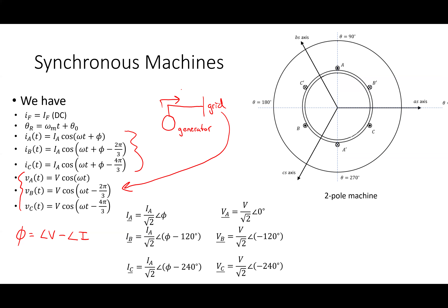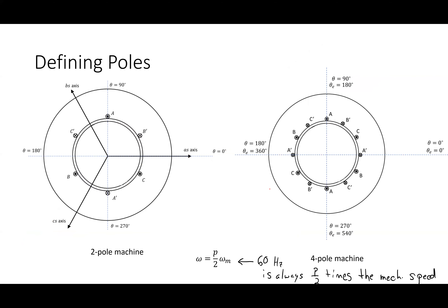In phasor notation, the currents and voltages are written with the amplitude V, so the phasor is V over square root of two — working in RMS. Phase A voltage is set at zero degrees to keep everything simple. That's the setup for connecting this thing to the grid.